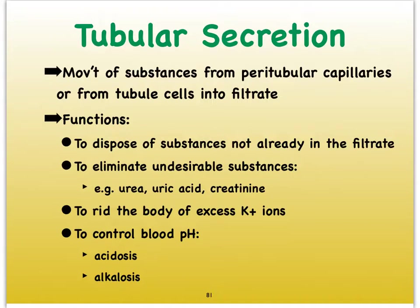So why would the blood want to suddenly return things back to the filtrate? This is a way to obviously get rid of substances that did not already make it into the filtrate — to get rid of things that really don't belong in the blood. It's also a way for us to get rid of too much potassium ions and other ions. But primarily, it is a way for us to regulate the pH of the blood. Your kidneys also play a very important role in regulating acidosis and alkalosis.